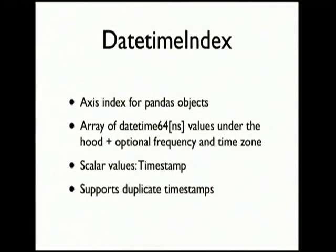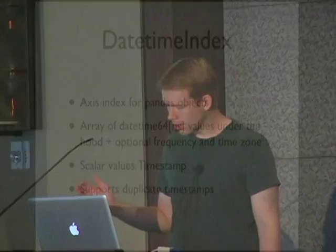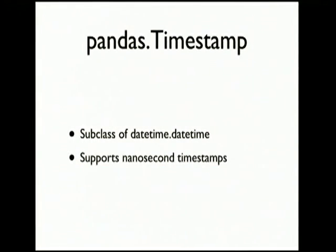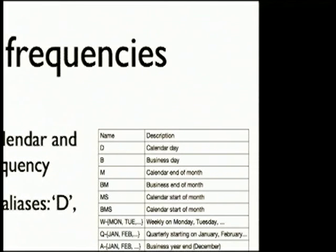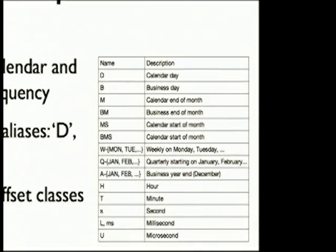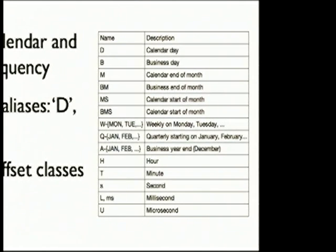In Pandas, all of the axis indexes — like the series and data frame row and column index — provide a subclass structure where you can define new index types. The DatetimeIndex is an axis index that has DateTime64 values. Scalar values come out as Timestamp objects, which are a subclass of datetime.datetime that knows how to deal with nanoseconds and has better time zone support. For fixed frequency time series, Pandas doesn't force you to be fixed frequency — you can have completely irregular data. But if you do use fixed frequencies, many are implemented with nice string aliases like D for daily or 4H for four hours, and you can even combine them like 1H 30min.